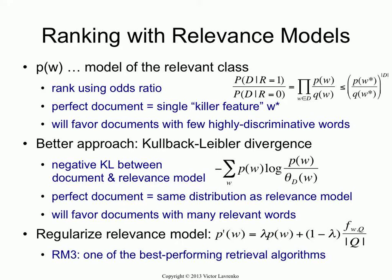So that's how you estimate pw. And of course, once you've estimated it, what you do is you stick it into your probability ranking principle, which says you're going to rank using the following ratio — the ratio over the words in the documents: pw, that's your relevance model, divided by qw, the background model computed from the entire corpus. It turns out there is a bit of a problem with this, and the problem is that this ranking function tends to prefer wrong types of documents.